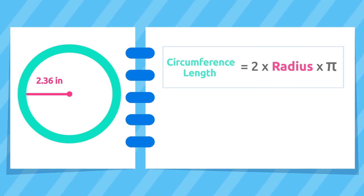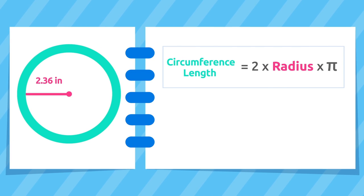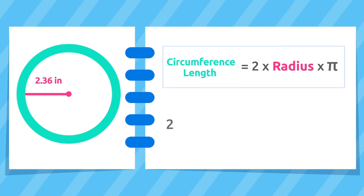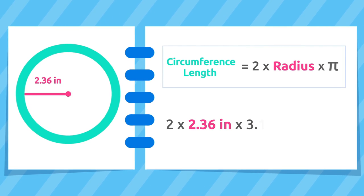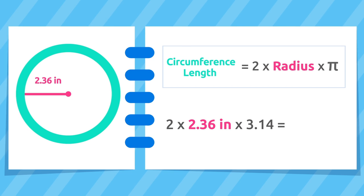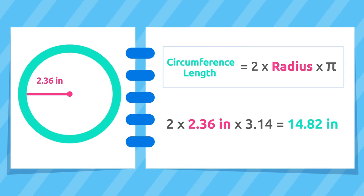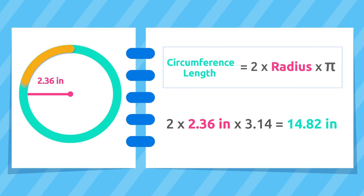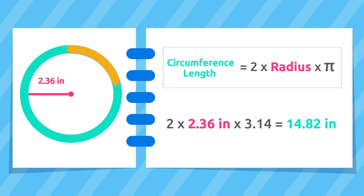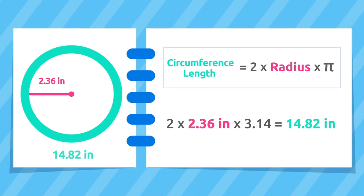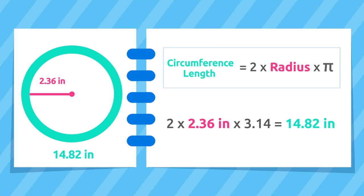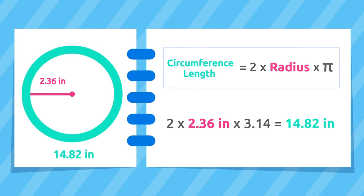To calculate its length we should multiply the radius by 2 and multiply by pi. The length of this circumference equals 14.82 inches.